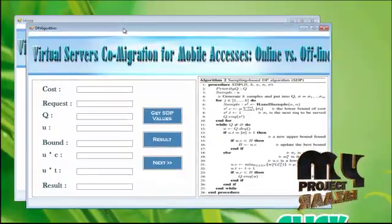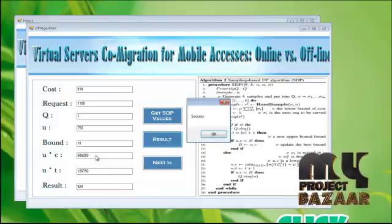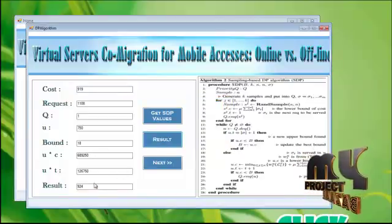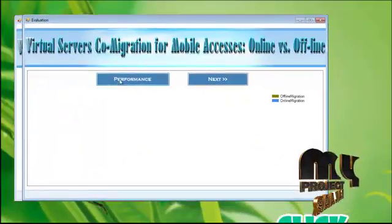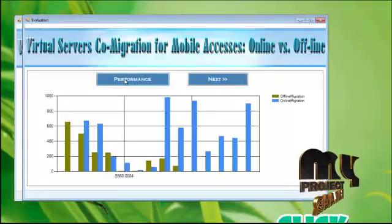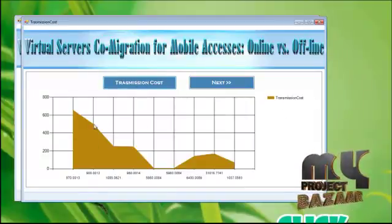Click the next button. In the second algorithm, we are using the sampling-based DP algorithm. Get the input values. You will get the cost, bounds, Q, and U bound values. To get the result values, click this. You will get the output result. Then click the next button. To know the performance evaluation, click this, and you will get the performance graph.